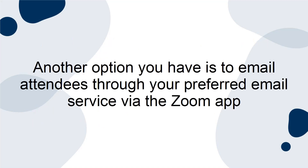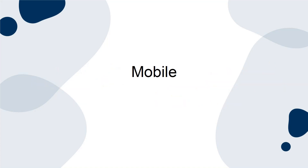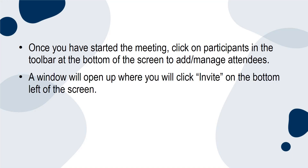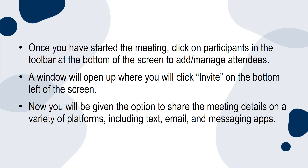Another option is to email attendees through your preferred email service via the Zoom app. Mobile. Once you've started the meeting, click on Participants in the toolbar at the bottom of the screen to add or manage attendees. A window will open where you click Invite on the bottom left of the screen, and you'll be given the option to share the meeting details on a variety of platforms, including text, email and messaging apps.